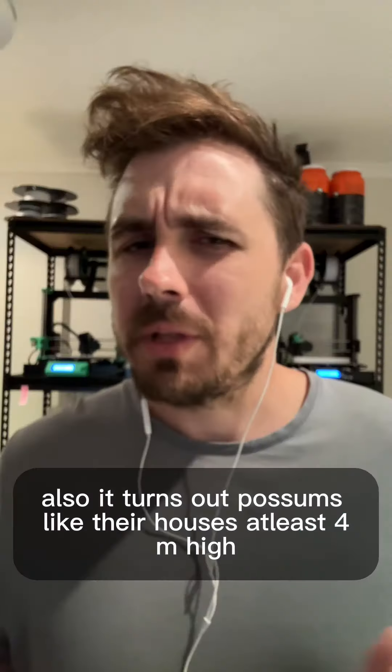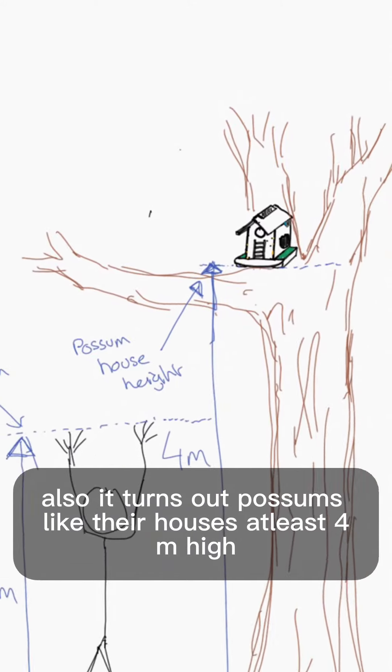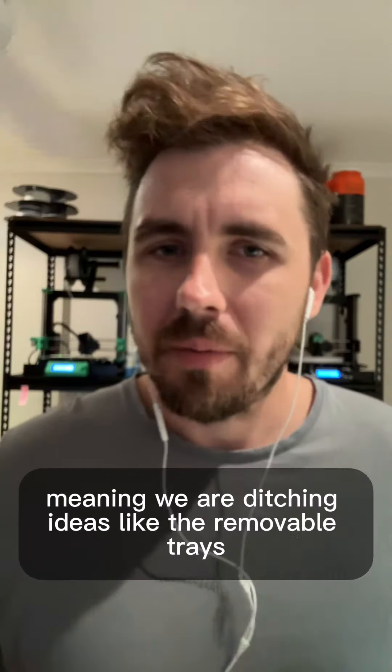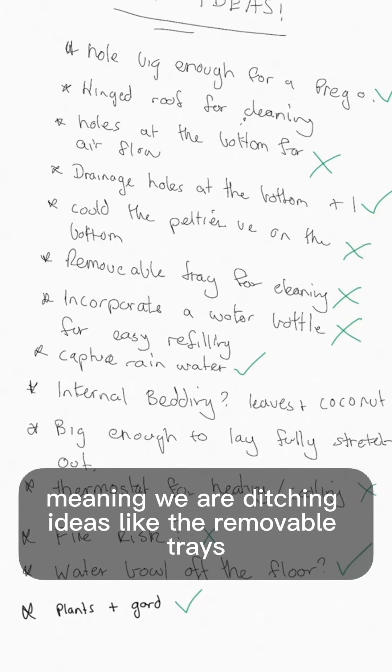Also, it turns out possums like their houses at least four meters high. So I'm aiming now for a maintenance-free design, meaning we're ditching ideas like the removable trays.